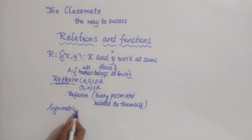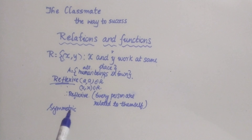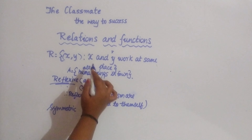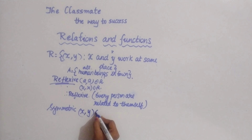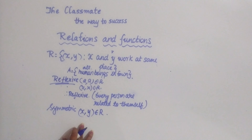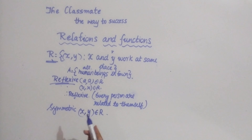The next condition is symmetric. Symmetric means: if (x, y) belongs to R, then (y, x) also should belong to R. Since x and y work in the same place, we consider (x, y) belongs to R. If x and y work together, then y and x also work together.